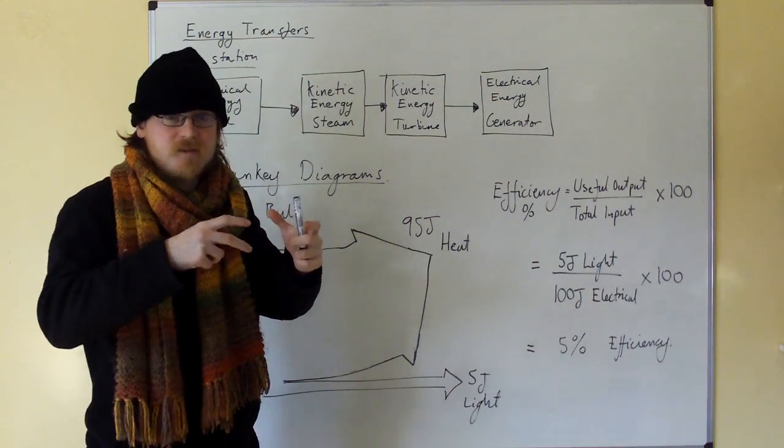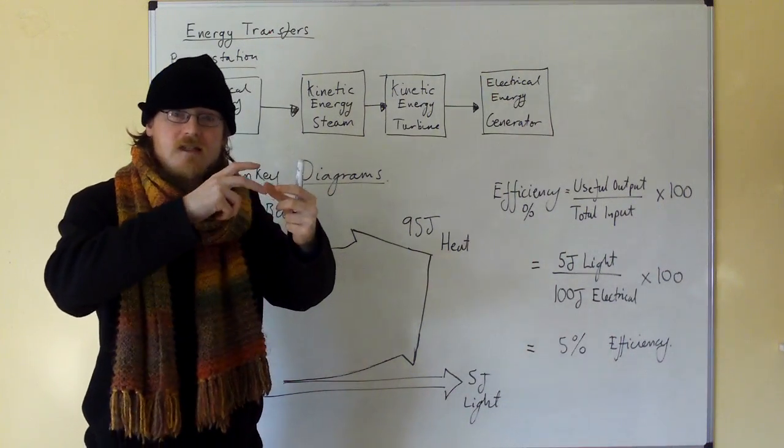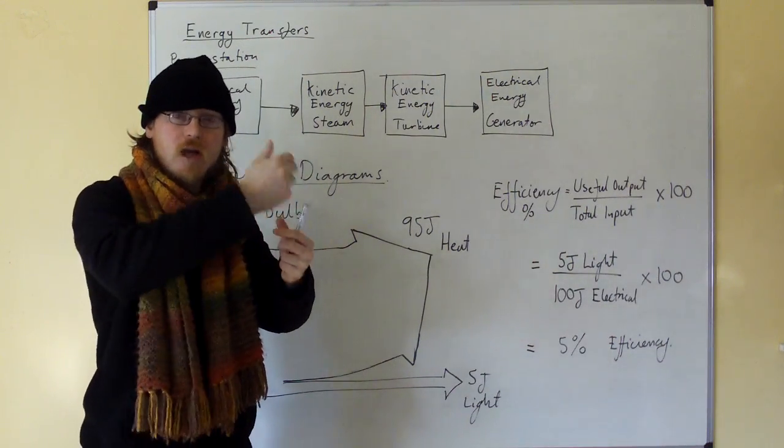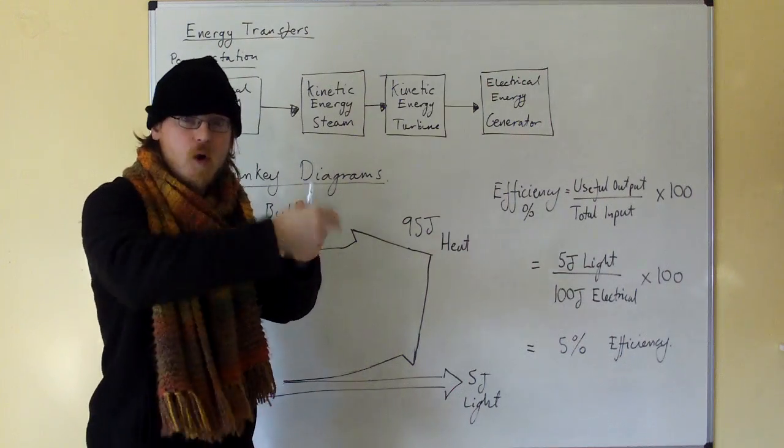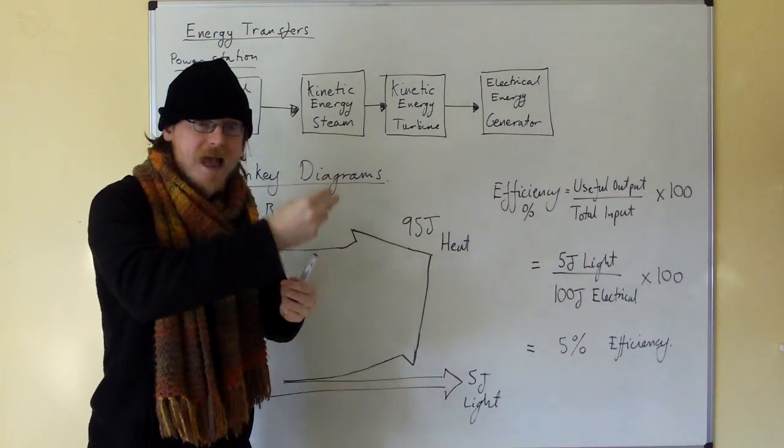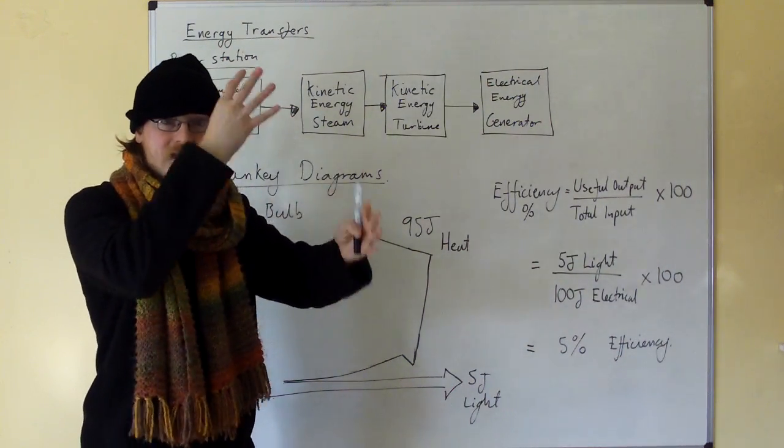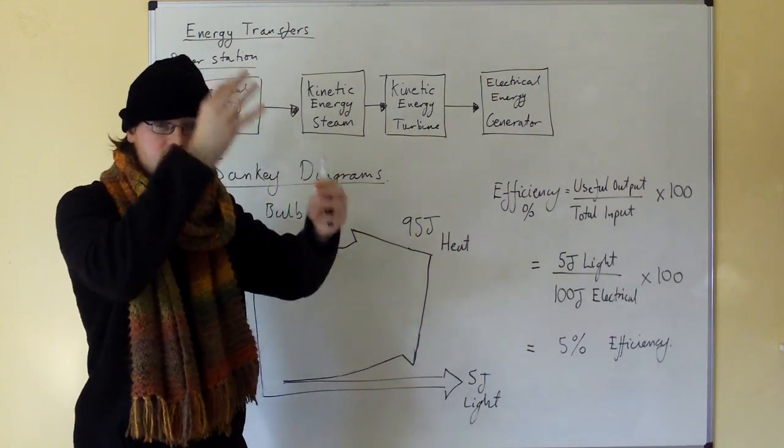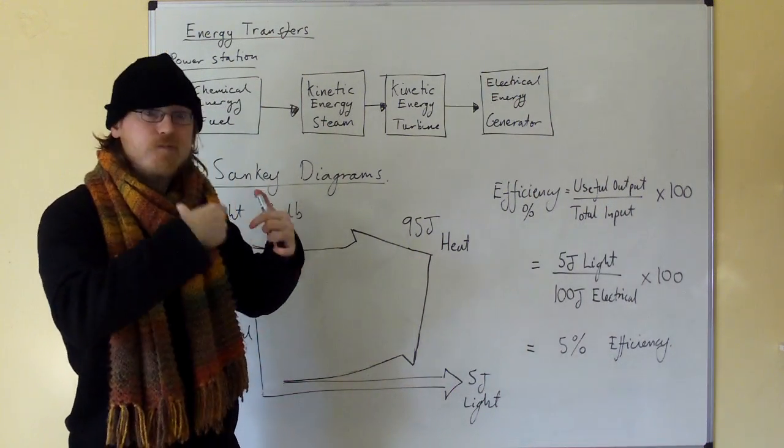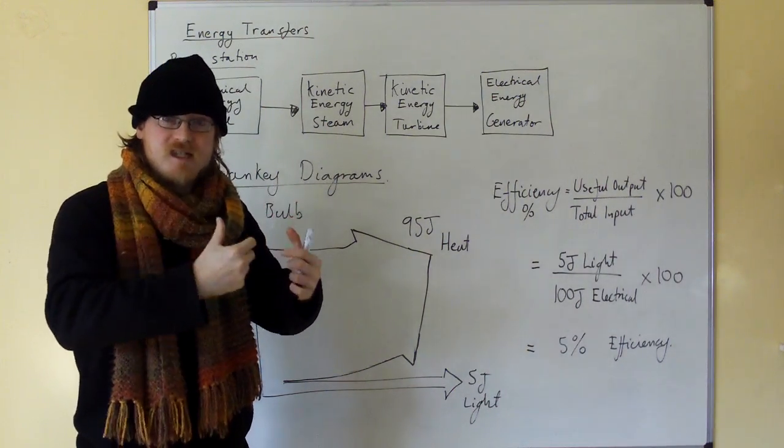Now a generator is basically—in simplification—it's a magnet inside a coil of wire. And as you rotate the coil of wire, or you rotate the magnet, you get crossing lines of electromagnetic flux, crossing lines of magnetic flux. And what this produces is electricity in the wire.